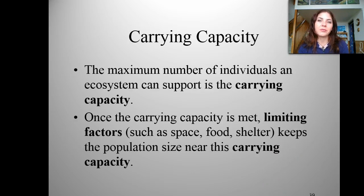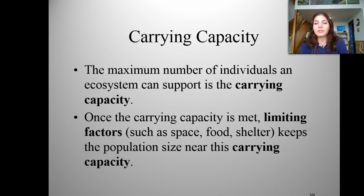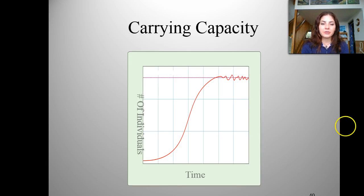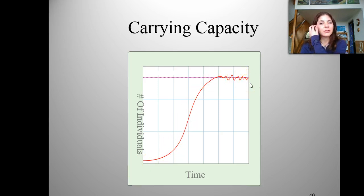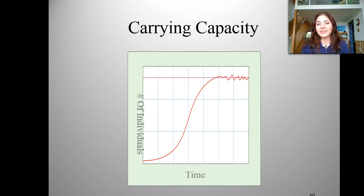The last thing we're going to discuss is carrying capacity of a population. This is the maximum number of individuals that an ecosystem can support. Once that carrying capacity is met, limiting factors such as food, shelter, space, mates, and different types of resources keep that population size in check. A population will grow exponentially until it reaches its cutoff. Right now, there's a big debate about what the carrying capacity for the human population on this Earth is — but that's something we'll get to next time.